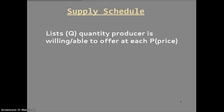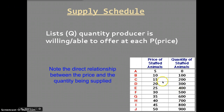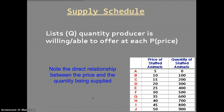A supply schedule simply lists the quantity that will be produced at different price levels. For example, with stuffed animals: at $5 they produce zero; at $10 they produce 100; and so on up to $50. The key is the direct relationship — as price rises from $5 to $50, quantity rises from zero to 900. This fits perfectly with the law of supply.